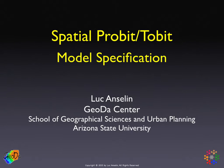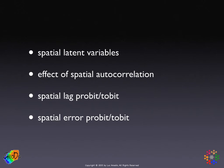In this second set of slides, we'll look a little closer at the model specification of the spatial probit and Tobit models — in other words, how we bring spatial effects into these specifications. In the first part, I'll talk about the concept of a spatial latent variable, which is an extension of the discussion of the classic probit but extended to spatial models.